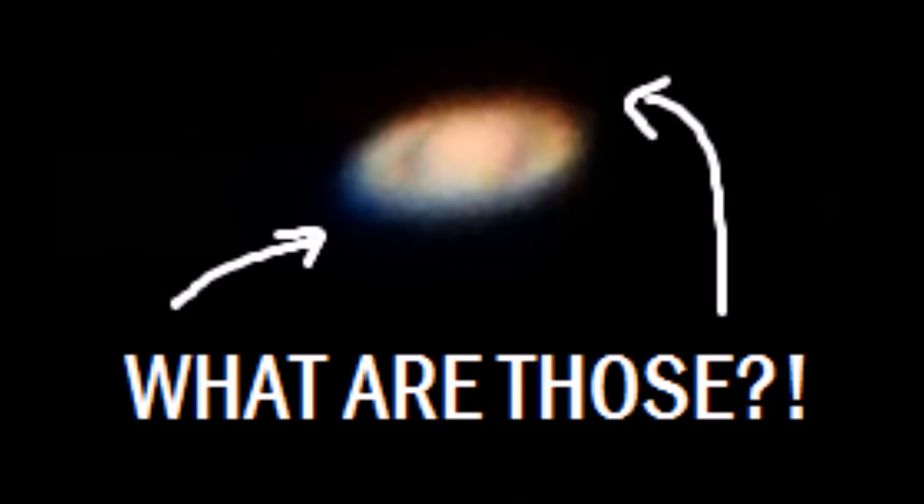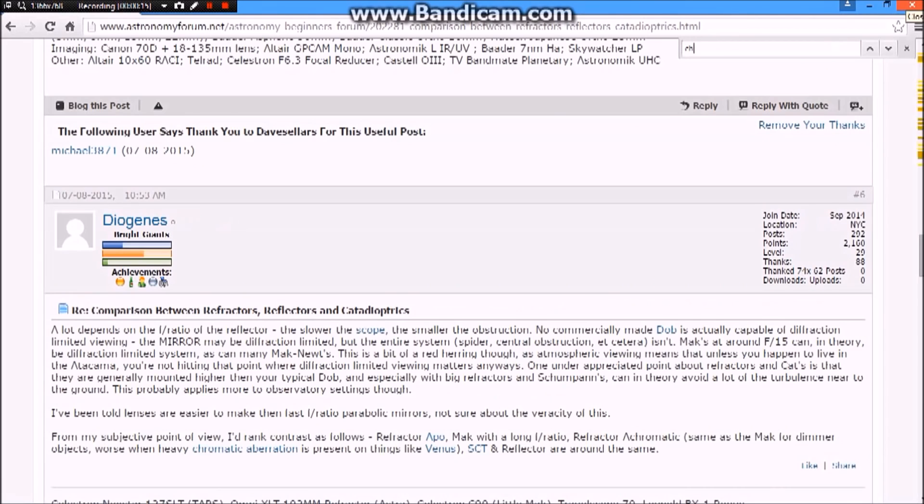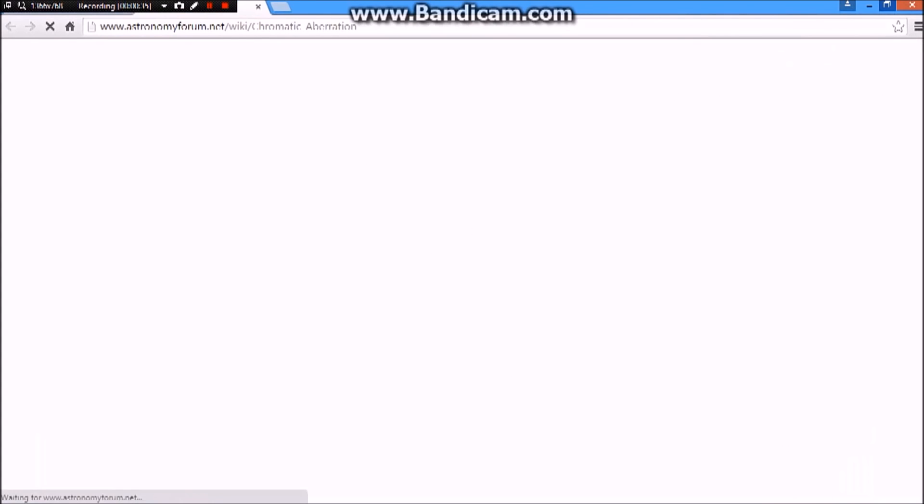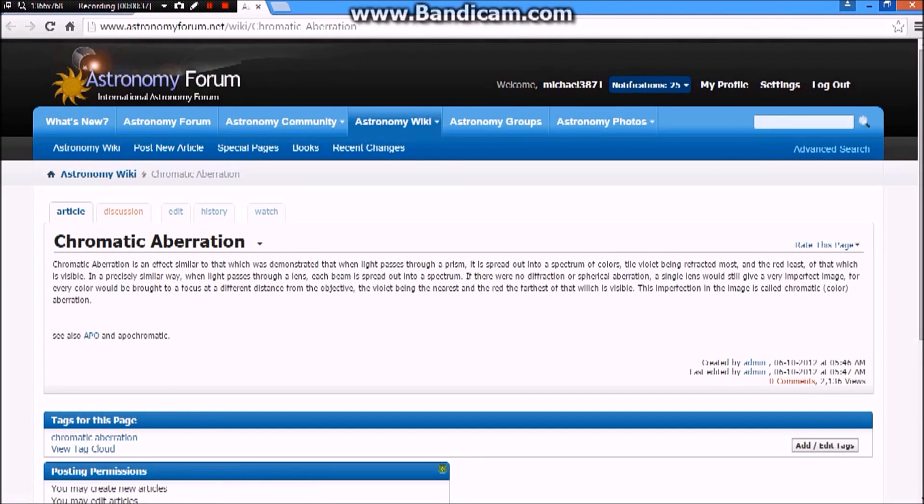What are those? On the left, there's a blue fringe and on the right, there's a red fringe. But why? Upon some research and asking on forums, I eventually discovered that this interesting scientific phenomenon is called chromatic aberration.